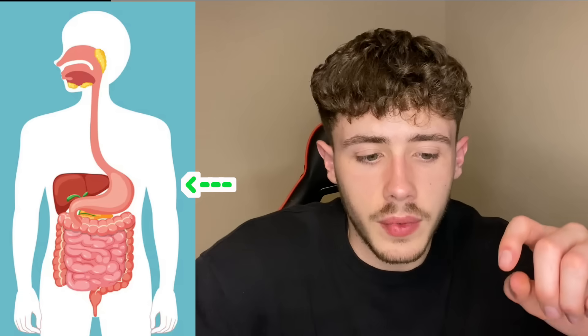Next we have the digestive system. When you eat food, how does it go through your body? The digestive system starts off in your mouth, goes down your oesophagus, into your stomach, into your small intestine, then your large intestine, and then your rectum where the waste food is stored. Throughout this process there are a whole load of other organs involved, as you can see in this diagram, so I would definitely recommend looking into that if you're not already familiar with it.